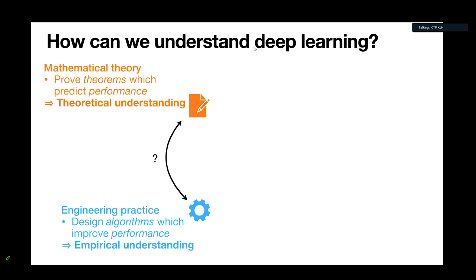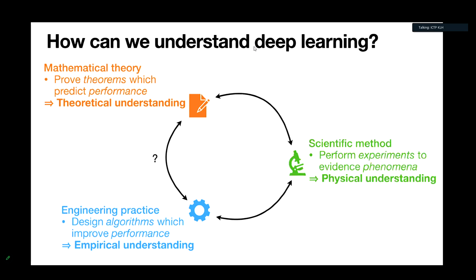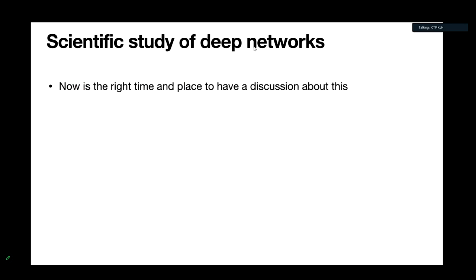But I think there's something missing from this picture — a third approach, which I'm going to call the scientific method, by which I mean we perform experiments to evidence phenomena. This gives us a third type of understanding I'll call physical understanding. It's been quite underexplored; there's a well-established theoretical community but not really a community around this type of work. A good recent example has been the discovery of scaling laws — an empirical phenomenon discovered through experiments — which has led to works in both theory and practice.